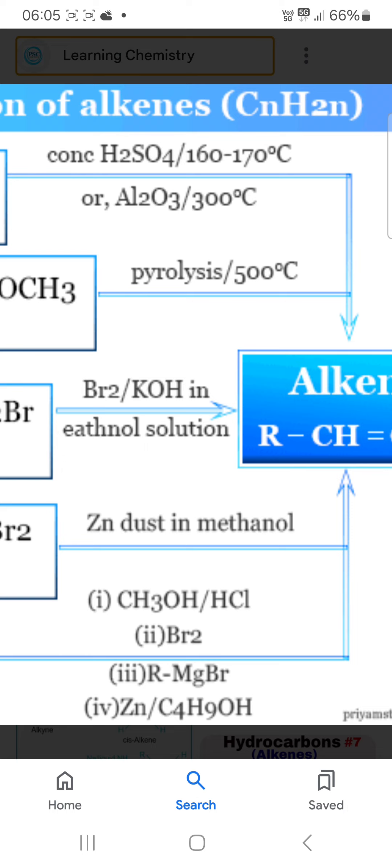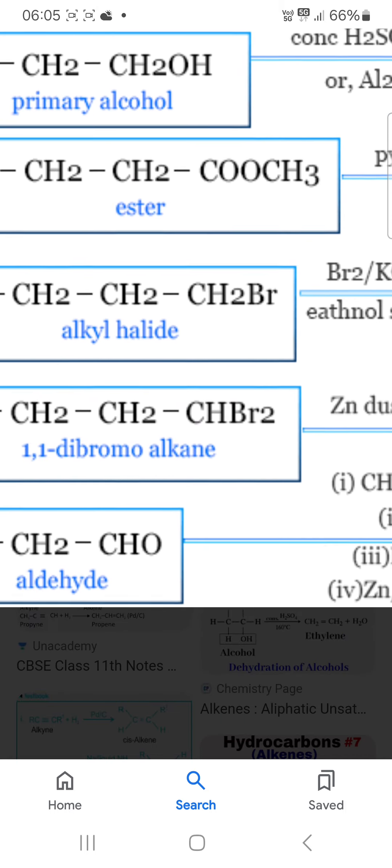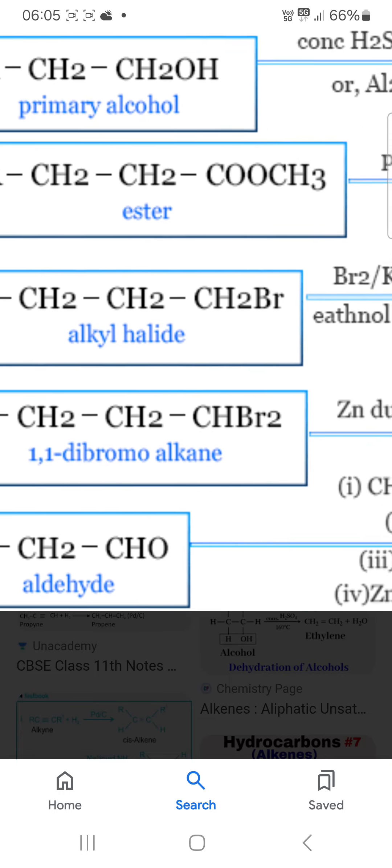Another route is from ester. If you have the ester, it undergoes pyrolysis at 500 degrees Celsius and alkene is obtained.